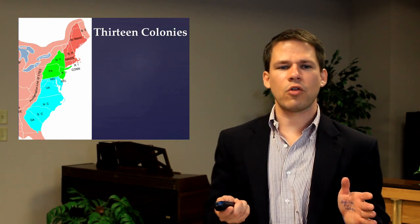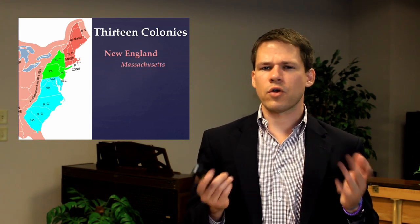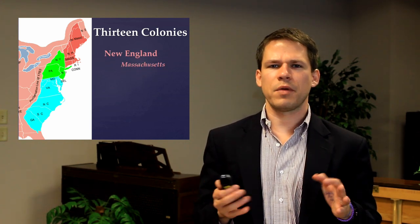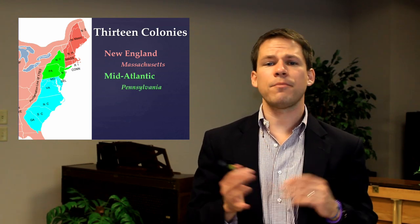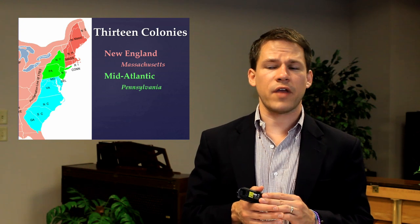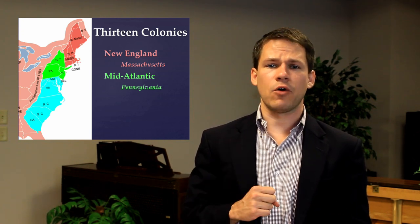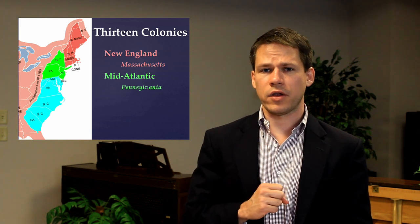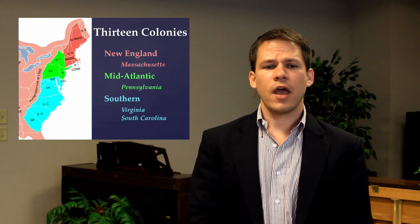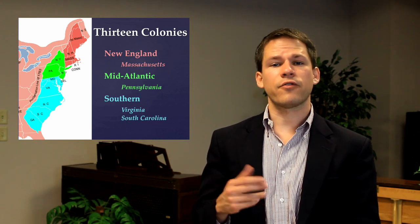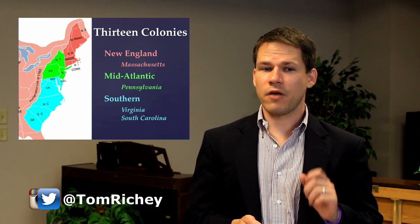Let's take a quick look at the 13 colonies. First, the New England colonies — Massachusetts would be a representative colony there. The mid-Atlantic colonies, sometimes called the middle colonies, with Pennsylvania as a representative colony. And then finally the southern colonies, where Virginia and South Carolina would be representative.